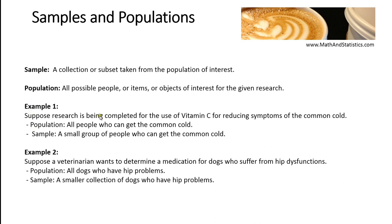For example, suppose research is being completed on the use of vitamin C for reducing symptoms of the common cold. In that case, the population is all people who can get the common cold, and that's basically all of us. So that's a huge population of over 7 billion, and a sample taken from that population is going to be a smaller collection or group of people who can get the common cold.